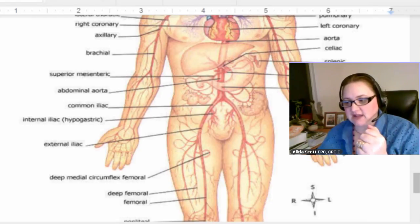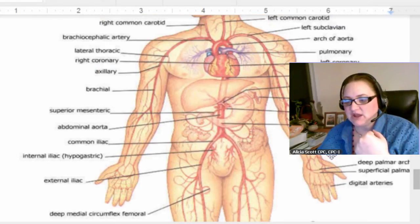Then, palmar is in the hand because we know palmar. Digital arteries because these are your digits when you're talking about bones and stuff. Okay, let's go over to the other side.